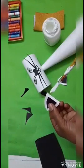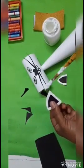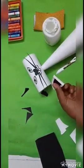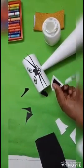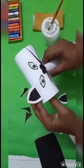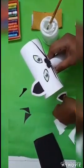Apply some glue here on the folded sides and paste this ear here to both sides of the cat face.